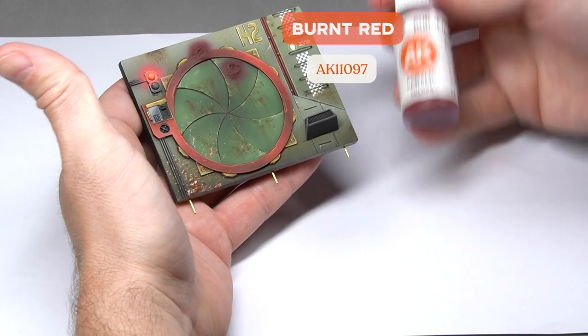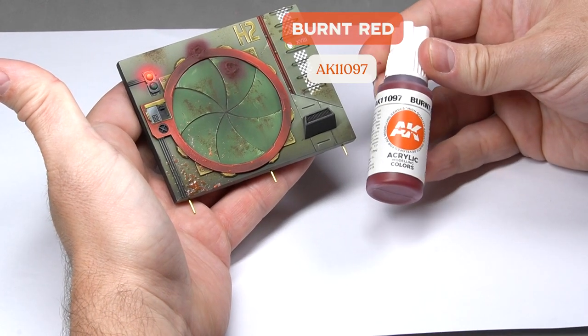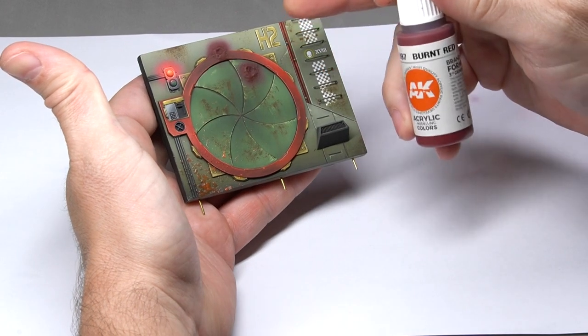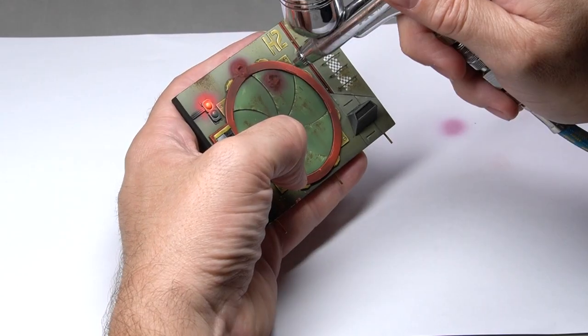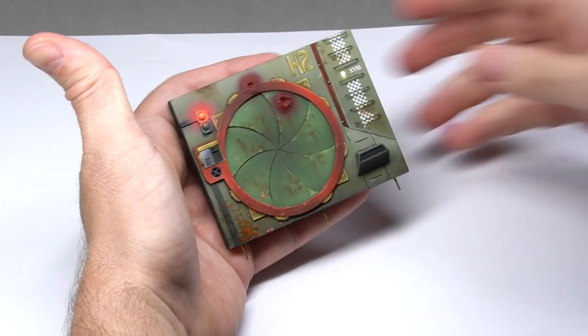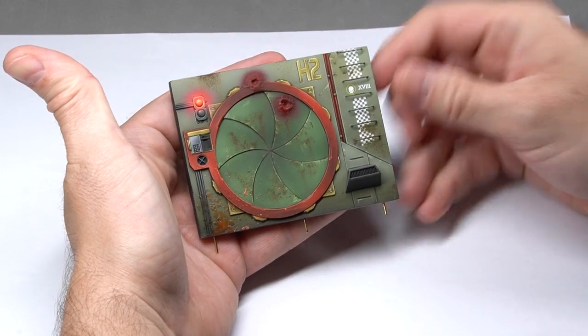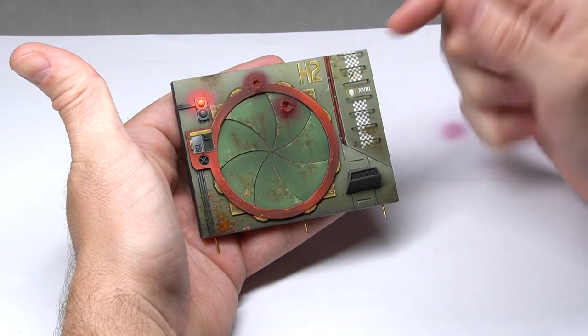We'll continue highlighting, this time using burned red and reducing the surface area even further. This way, we're going to make the raised part progressively brighter.